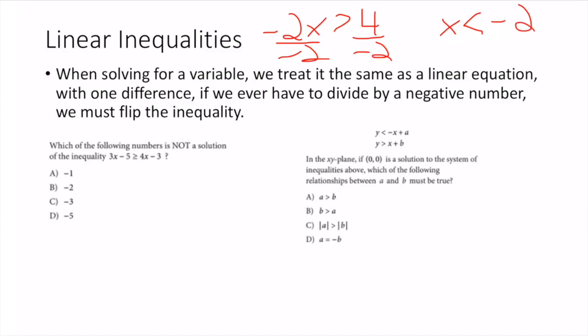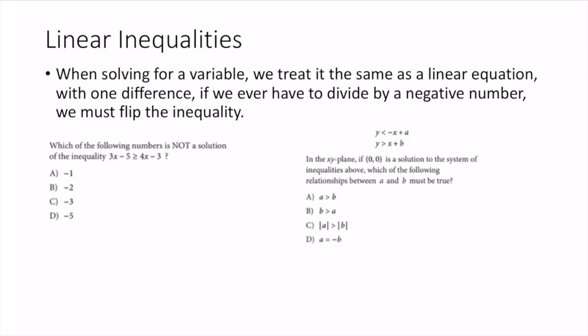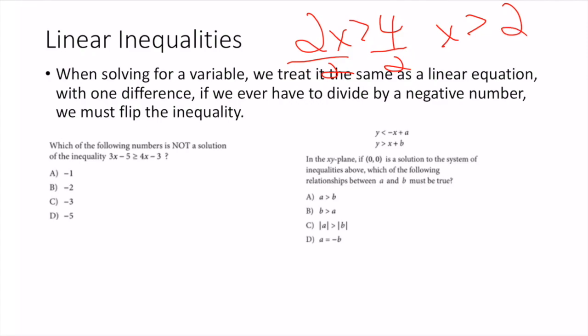Dividing by a negative number requires flipping the inequality. If instead it was just 2x > 4 and I was dividing by 2 (a positive number), I would keep the inequality facing the same way. That is really the only difference when solving for these things.